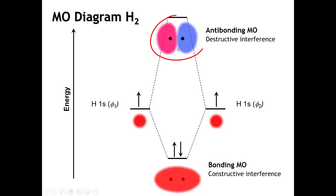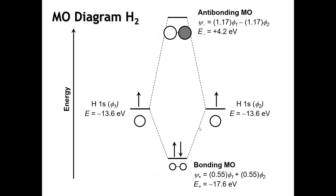We're also going to get an anti-bonding molecular orbital, where we have destructive interference between the wave functions of the two hydrogen atomic orbitals. The color coding refers to the sign of the wave function — blue might be a negative sign and red a positive sign. Putting a nodal plane right between your two atoms is going to push the electron density to the periphery of the molecule, and that's going to be less favorable. The anti-bonding molecular orbital is going to have a higher energy than the isolated atomic orbitals of the hydrogen atoms.